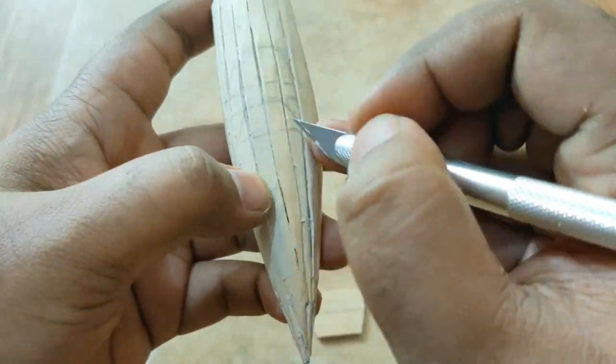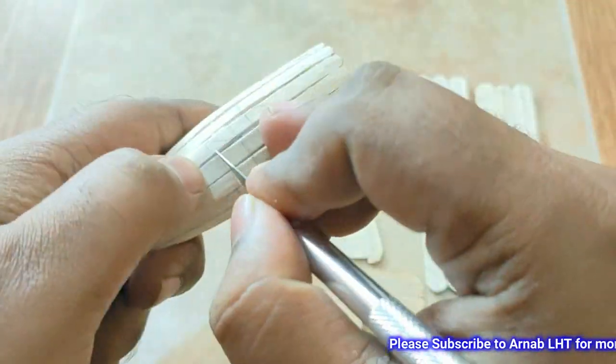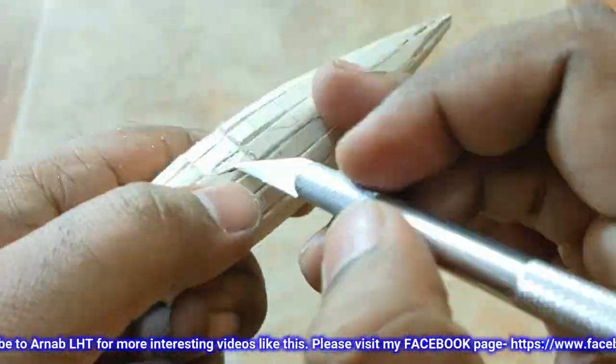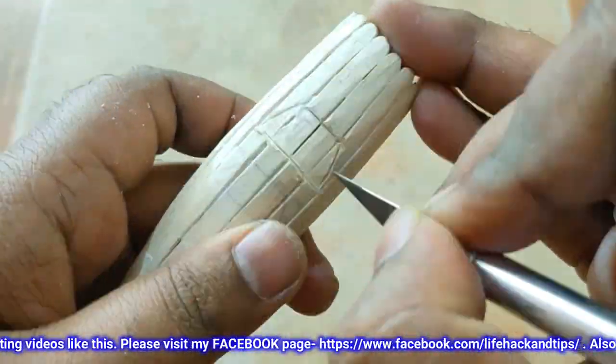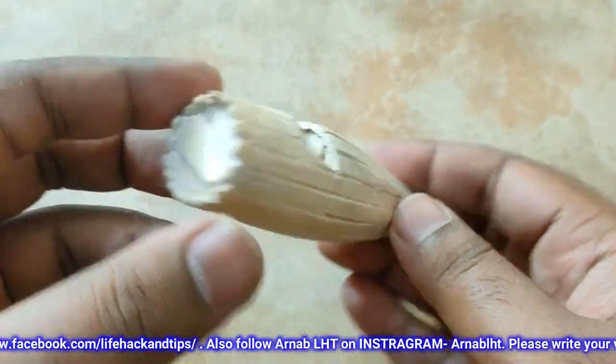Now we will cut out the pilot seat from this body. Two small chambers need to be cut out very carefully. If any stick pops out, you can again fix it with glue.